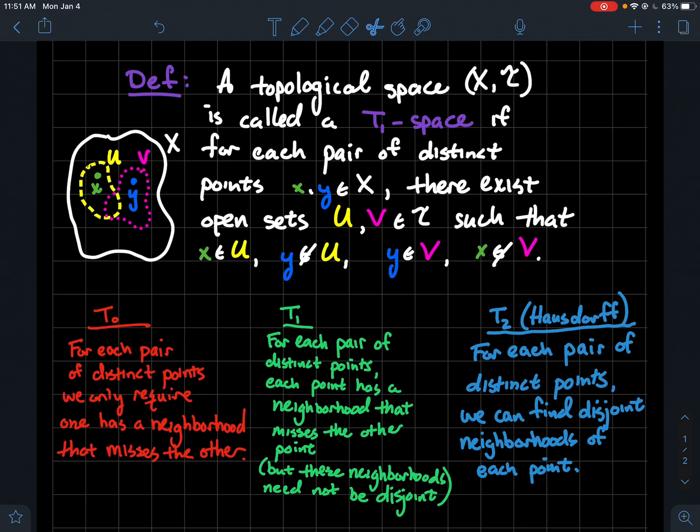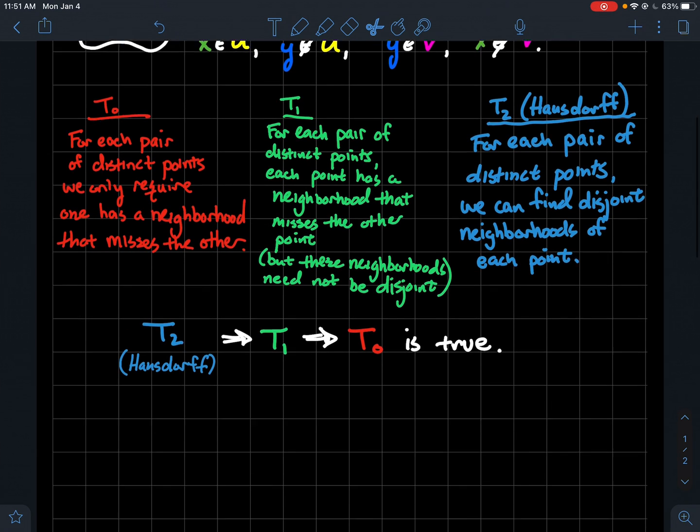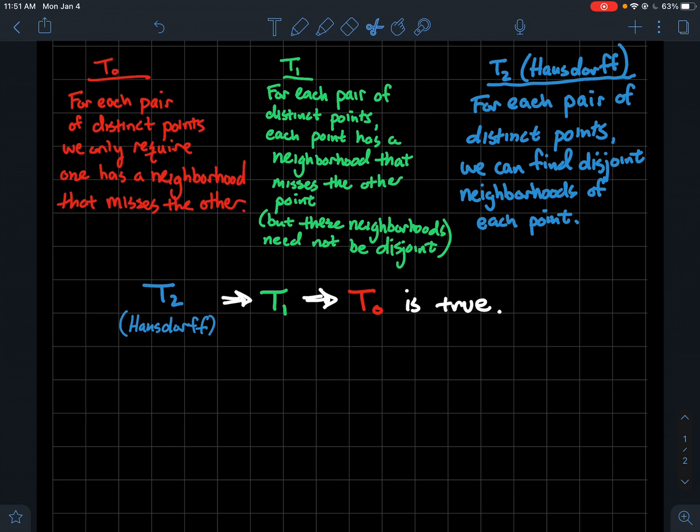And one way you could think about this, or that I've heard it described before, is that T0 is kind of saying we've got just enough points to separate points from each other. T1 though, you're kind of requiring more open sets to separate points. And of course with T2, the fact that you could find distinct neighborhoods that separate the points, you're even requiring more open sets in your topology to separate your points. So what do we want to look at here next? There are some logical implications. In particular, a T2 space is T1, so T2 implies T1, and T1 implies T0. So like any Hausdorff space is automatically T1 and T0, and any T1 space is automatically T0. Always happens.